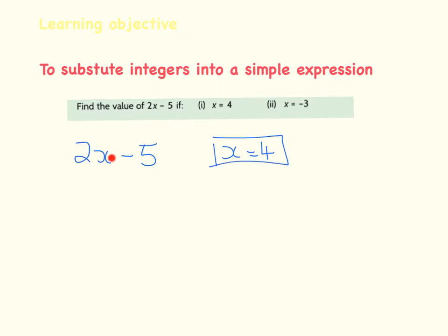Now, 2x, if x is 4, it's 2x, which means it's 2 times x. So I'm going to use brackets here to help me with this. So another way of writing that is 2 times, and in this case our x is 4, 2 times 4 minus 5. And 2 fours are 8, and 8 minus 5, the answer is 3.